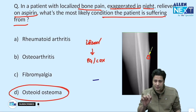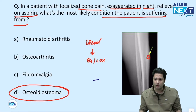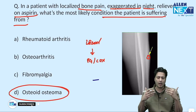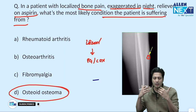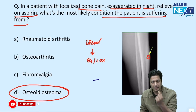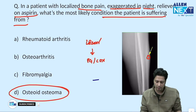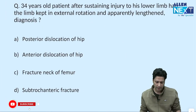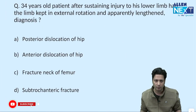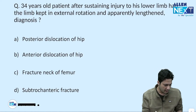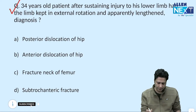Hopefully you answered this question correctly. Those who attended the class — just by reading the question, the answer osteoid osteoma would have flashed in front of them. The next question involves a 34-year-old patient who, after sustaining injury to his right lower limb, had the limb kept in external rotation and apparently lengthened.